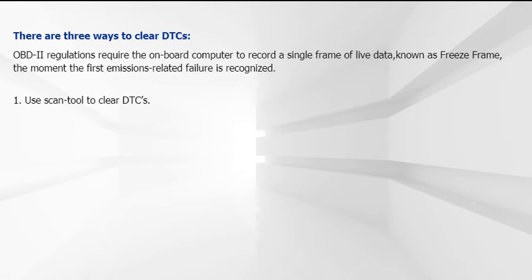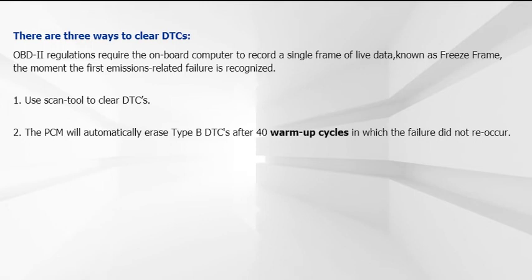It is highly recommended that any DTCs found are left in the system until the fault has been corrected. If any DTC is reviewed and then erased, readiness status and freeze frame data will be lost. Do not erase DTCs until the vehicle has been repaired. The PCM will automatically remove any stored DTCs following the completion of 40 consecutive warm-up cycles in which there was no occurrence of the original failure.